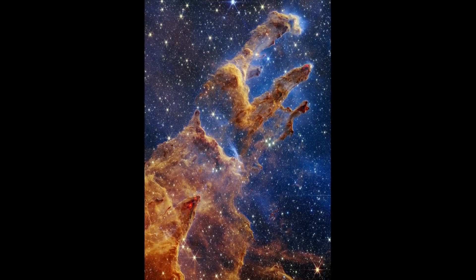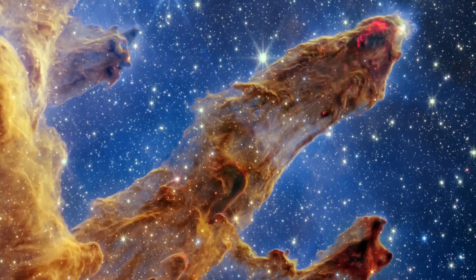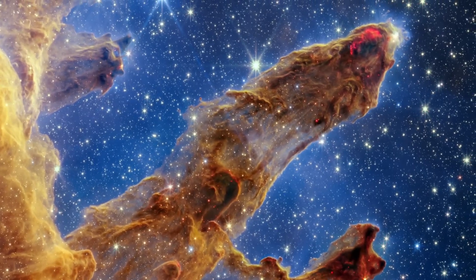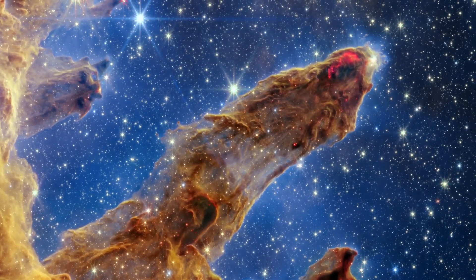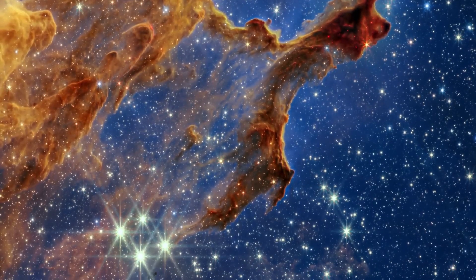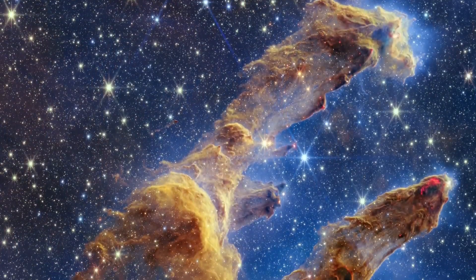Though these three-dimensional pillars may resemble unearthly rock formations, they are far more permeable. Composed of cool interstellar gas and dust, these celestial columns can appear semi-transparent when illuminated by near-infrared light.